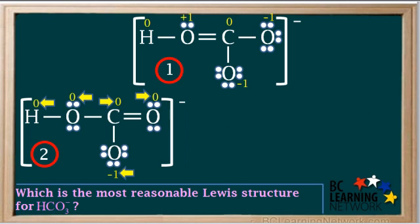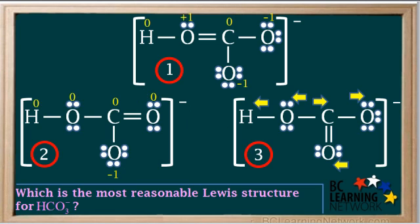After calculating the formal charges, you can see that all of the atoms have a zero formal charge except the oxygen on the bottom that has the three lone pairs around it. Its formal charge is negative 1. Negative 1 is also the net charge in the ion, so this works out.